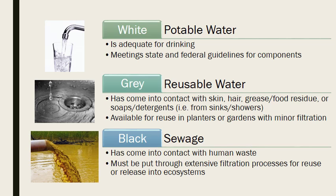The last type is black water, which is sewage. Black water is anything that has come in contact with human waste. It comes from your toilets and must be put through an extensive filtration process in order to be released back into the ecosystem.